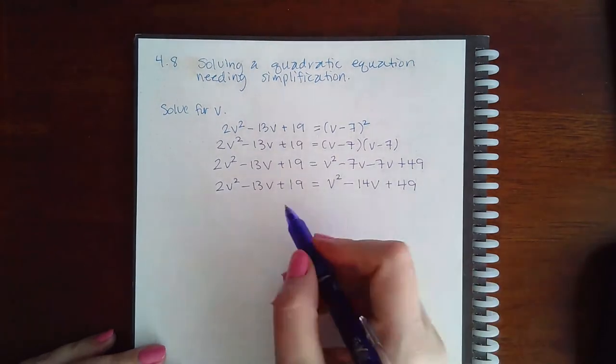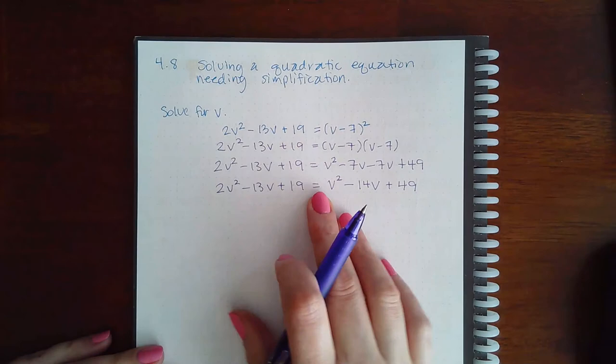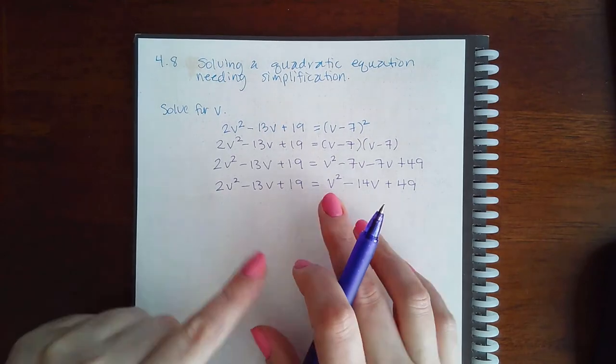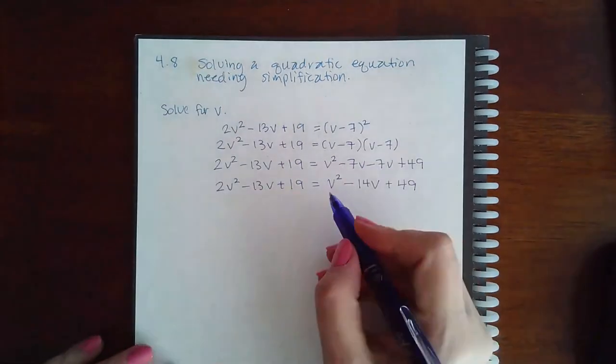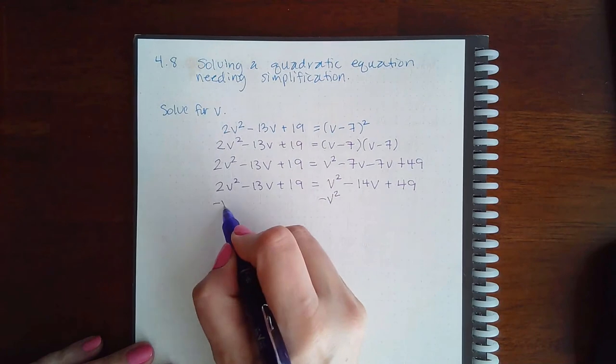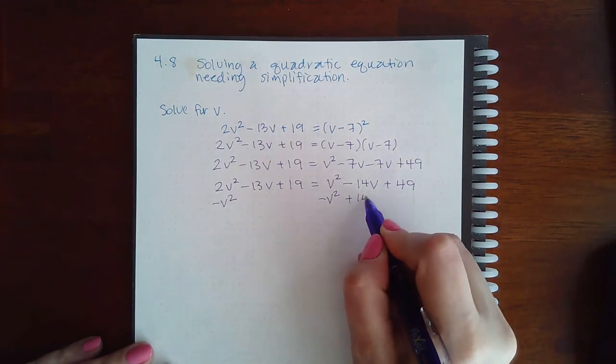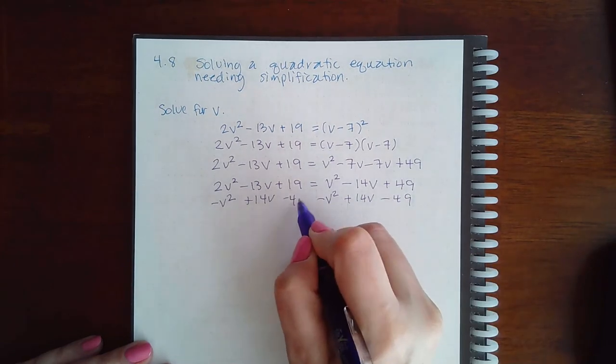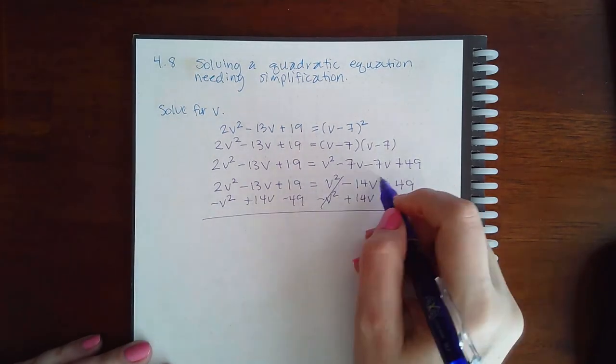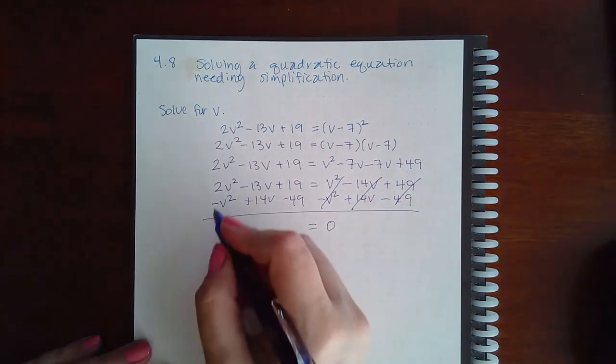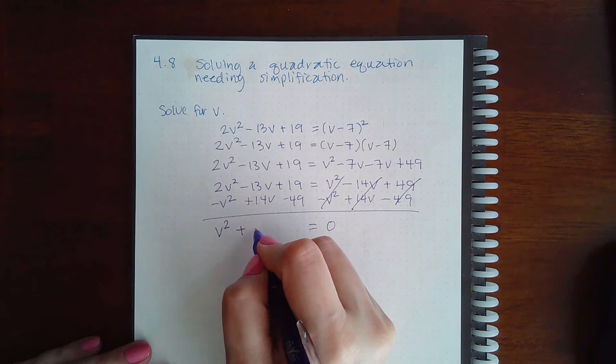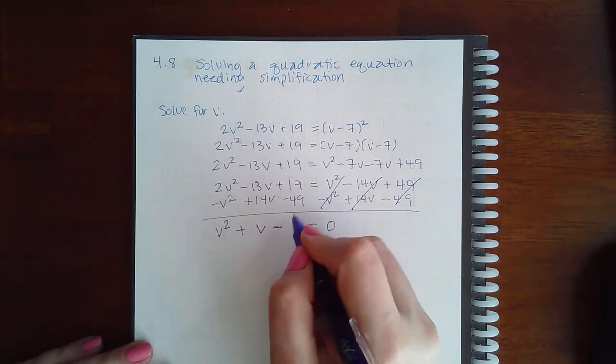Then from there, you want to get everything over to one side. Since I have more v's over here and they're positive, I'm going to move all of these terms over there. So minus v², minus v², add 14v, add 14v, minus 49, and minus 49. That way, every single one of these terms will cancel, leaving me with 0. Here I will have v² + v - 30.